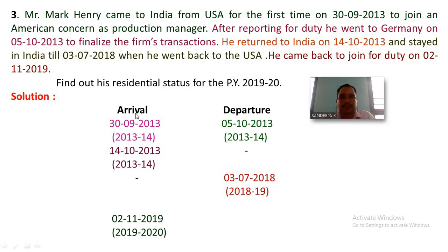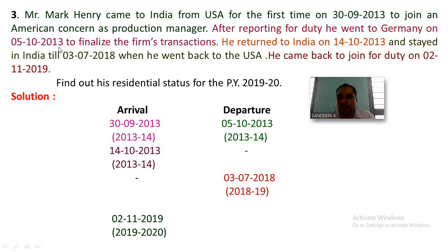Write down the solution. In the first column write down arrival, in the second column write down departure. He came to India — write in the arrival column: 30th September 2013, which falls in the financial year 2013-14. Next, after reporting for duty he went to Germany on 5th October 2013 to finalize the firm's transaction. Write in the departure column: 5th October 2013, financial year 2013-14.